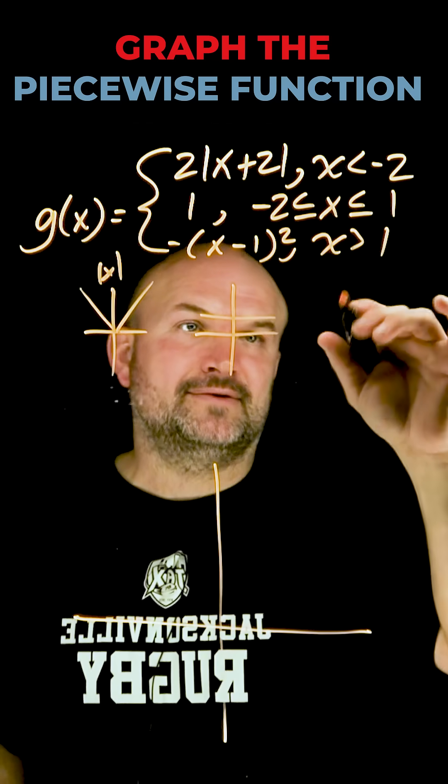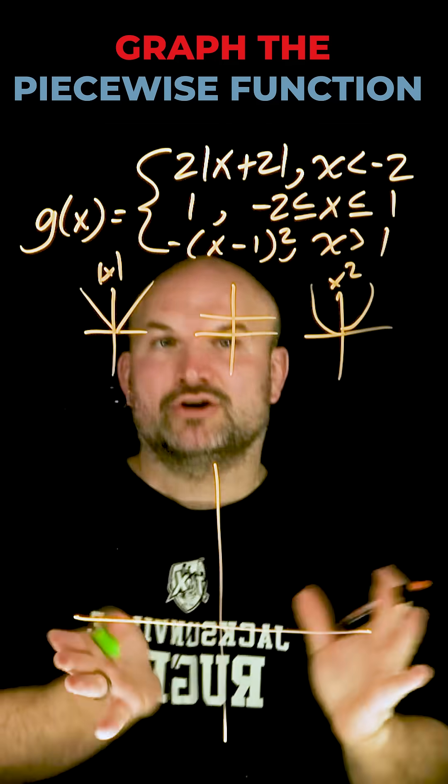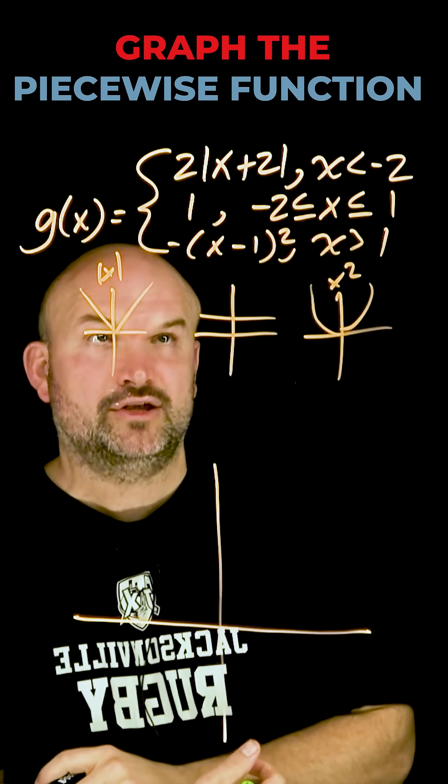And then we have a quadratic. So that's going to be the x squared. And then we have our u-shaped graph. So we know the parent graphs of at least the equations that we're going to be dealing with.